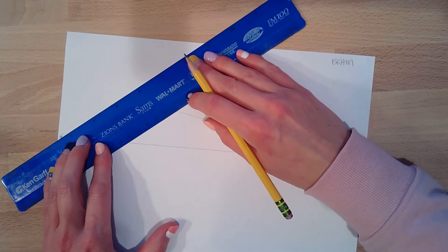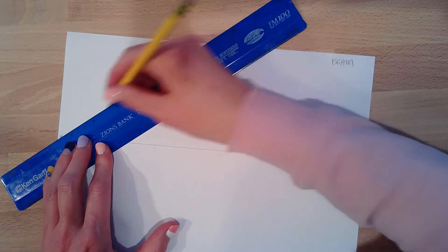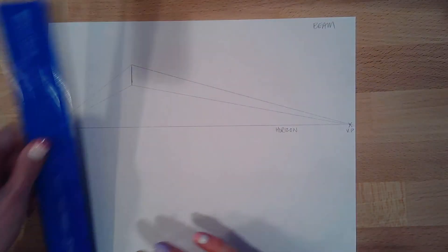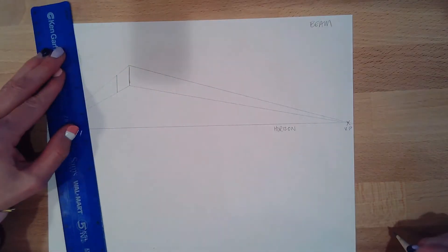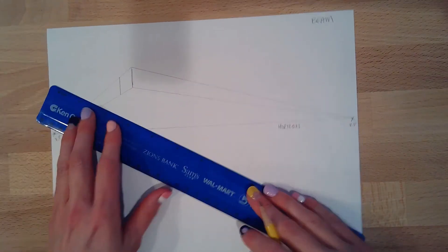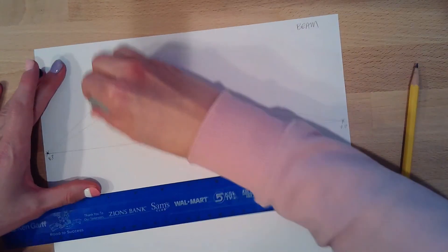Then what you need to decide is how long you want your beam. So this is going to be the short side of my beam. Not to confuse, we'll erase these lines.